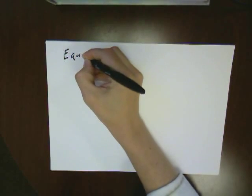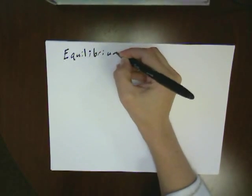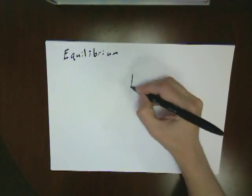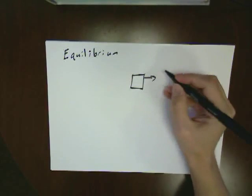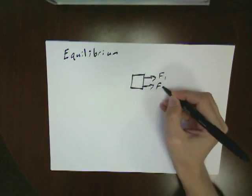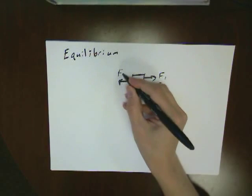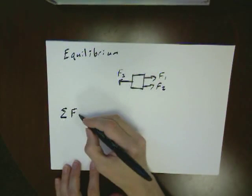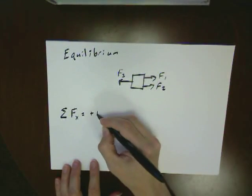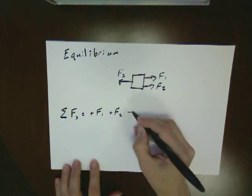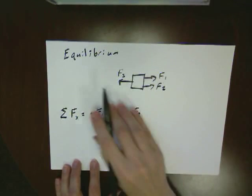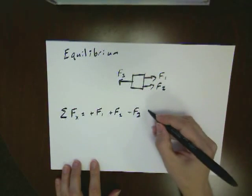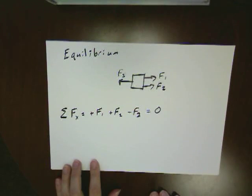If we took a situation where we're told it is in equilibrium, then that can actually help us find an unknown force. So let's just take an example here where I've got a force F1, F2, and F3, very much like my last example. Write this out as the sum of the forces in x is plus F1, plus F2, minus F3. And because it told me it's in equilibrium, I know those have to balance out to be zero.